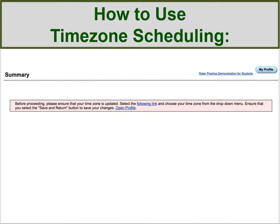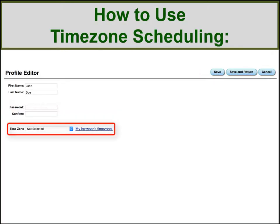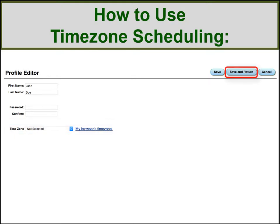If you log onto your account and see this message, either follow the link or select the My Profile button in the top right-hand corner of your screen. Under your profile, select the time zone in which you reside. If you are unsure of your time zone, you can select the link My Browser's Time Zone. Once you have finished, select the Save and Return button in the top right-hand corner of your screen.